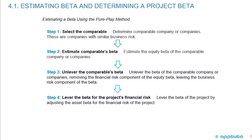Step two is to estimate the comparable's equity beta. Step three is to unlever the comparable's beta — unlever the beta of the comparable company or companies, removing the financial risk component of the equity beta and leaving the business risk component. Step four is to lever the beta for the project's financial risk, adjusting the asset beta for the financial risk of the project.